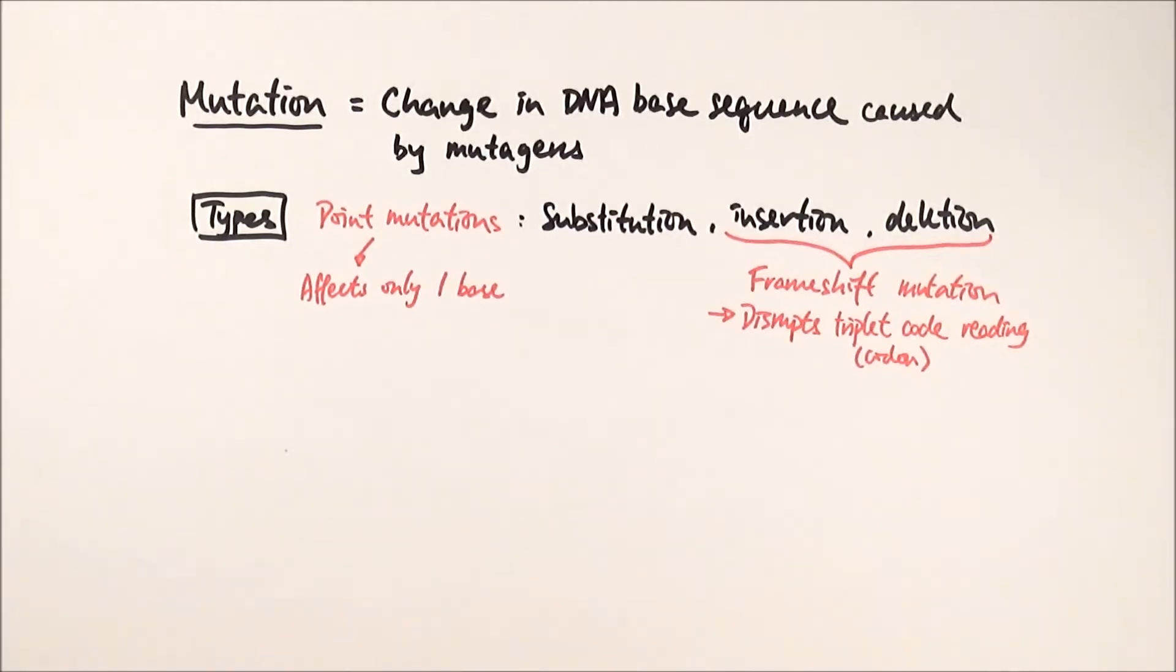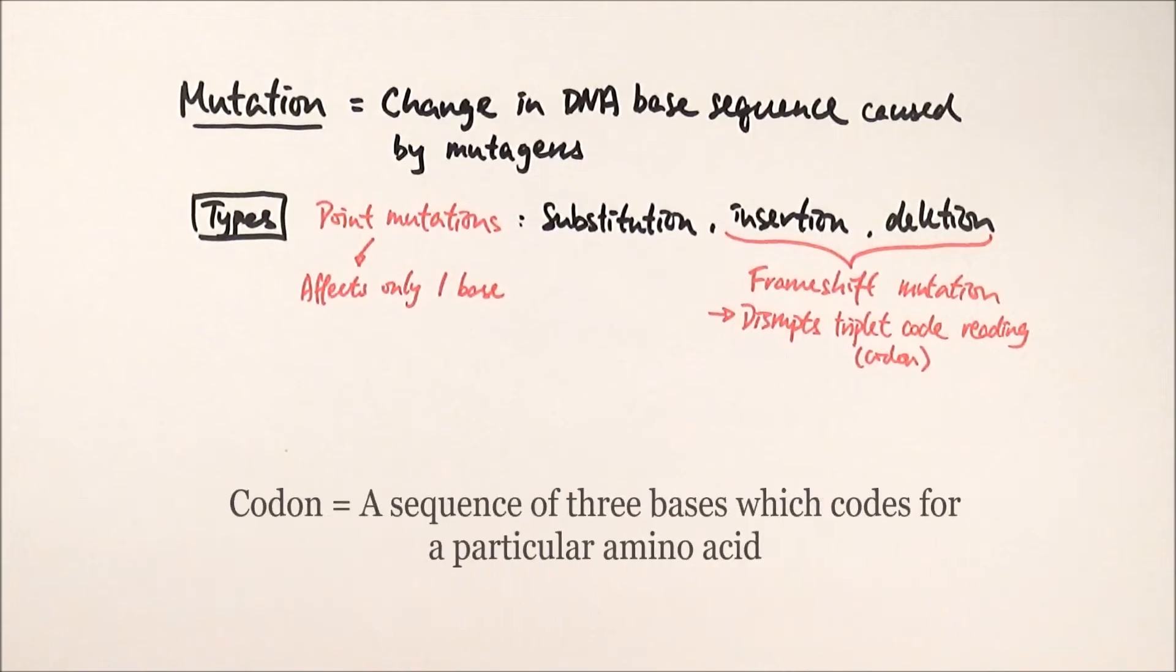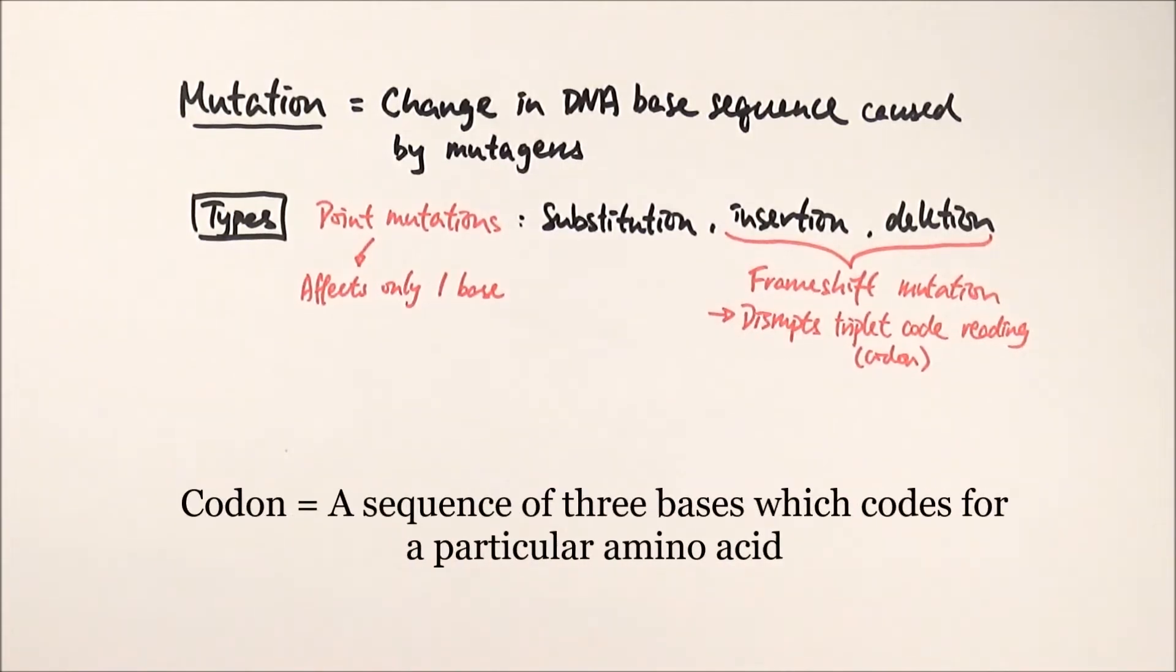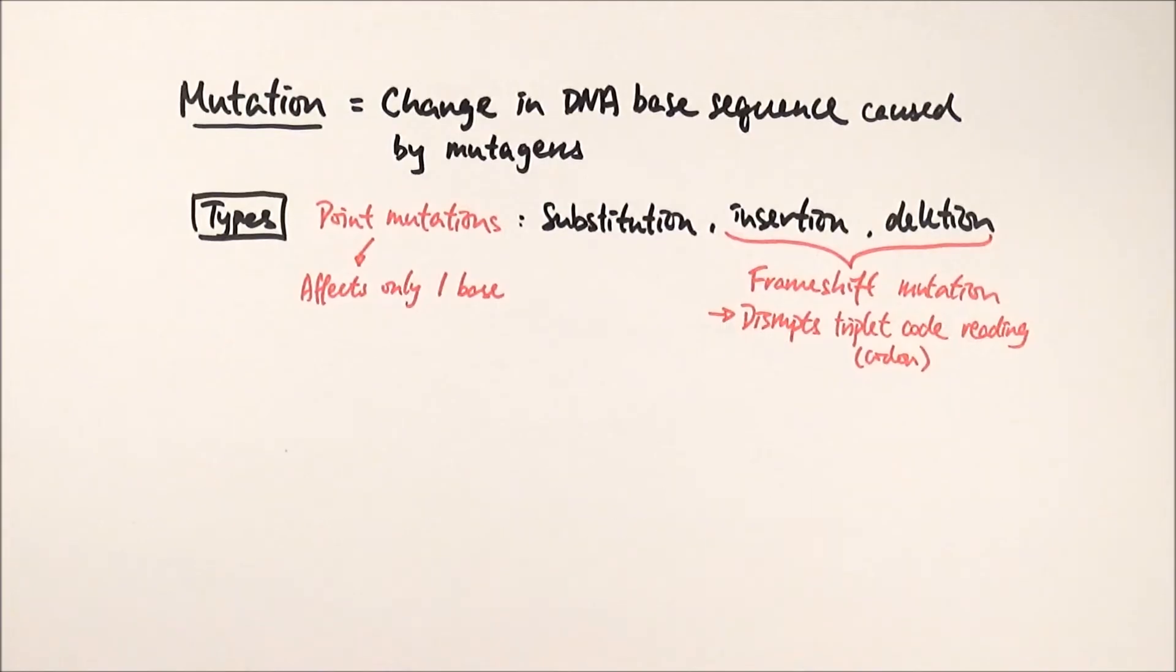As you will know from AS, the DNA sequence is read in three bases at one time. So we call it this triplet code codon, and each codon codes for one particular amino acid.